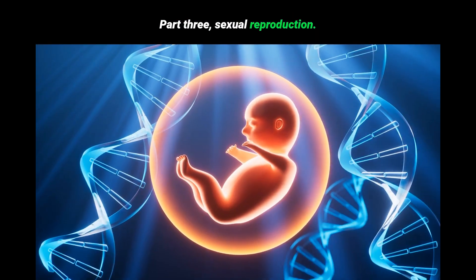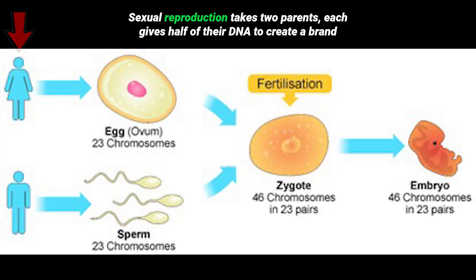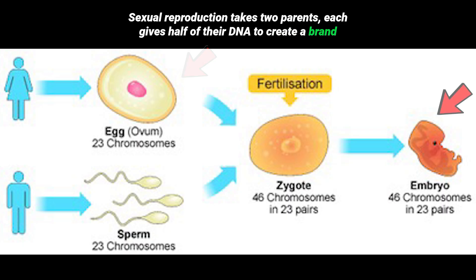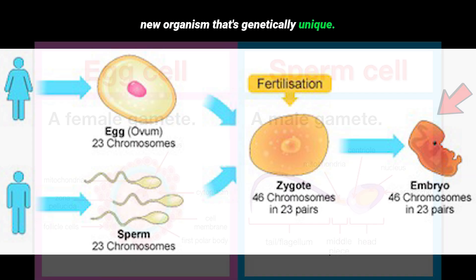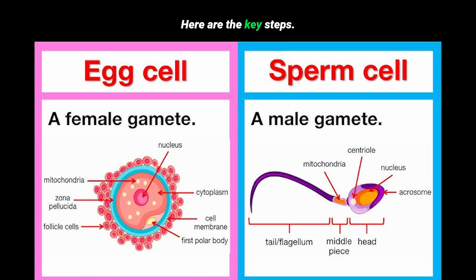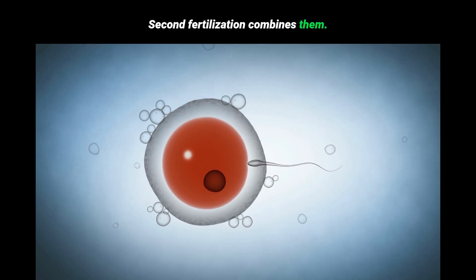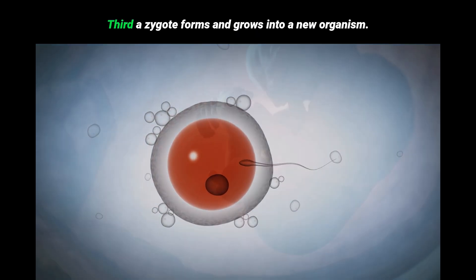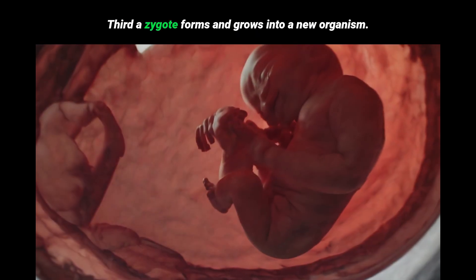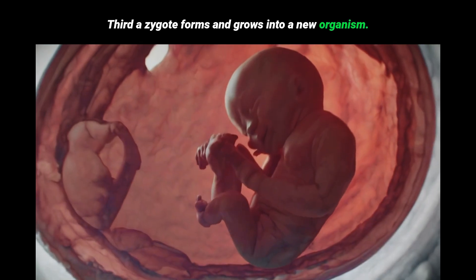Part 3: Sexual reproduction. Sexual reproduction takes two parents. Each gives half of their DNA to create a brand new organism that's genetically unique. Here are the key steps: first, meiosis creates sex cells like sperm and eggs; second, fertilization combines them; third, a zygote forms and grows into a new organism.